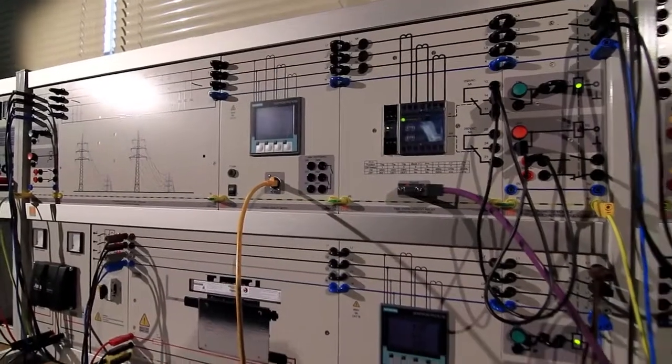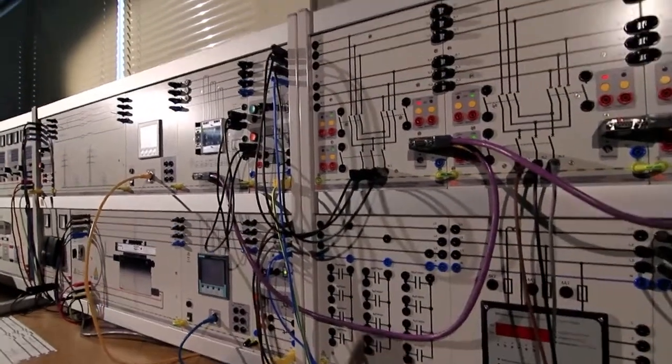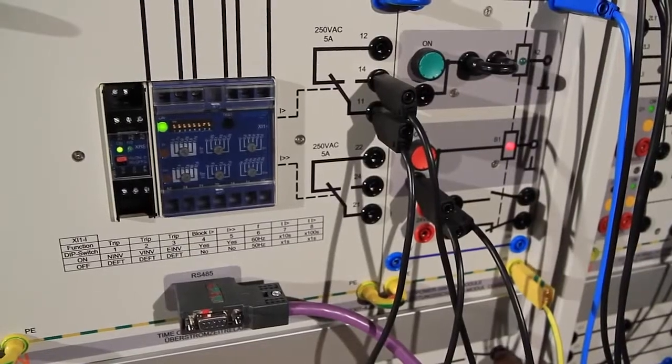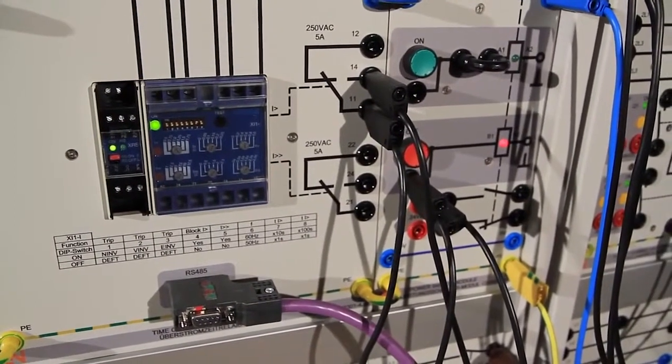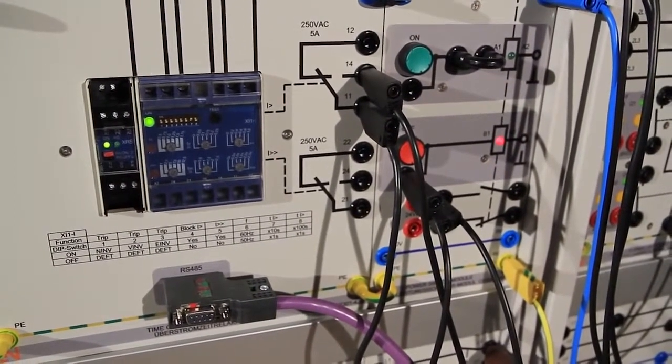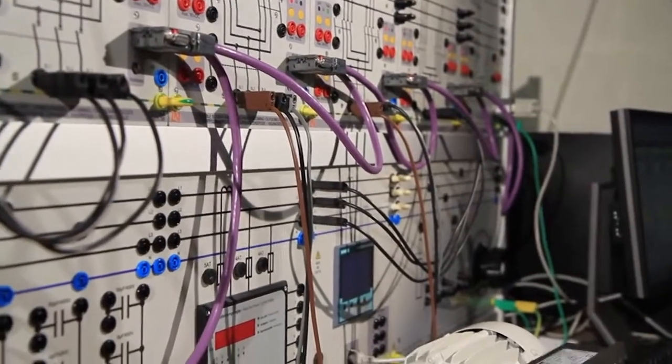The next element in the system is an overcurrent relay. This relay is also TCP IP enabled. Then the next is the circuit breaker. And one of the most important features of the system is a double bus bar system, as you can see right here.